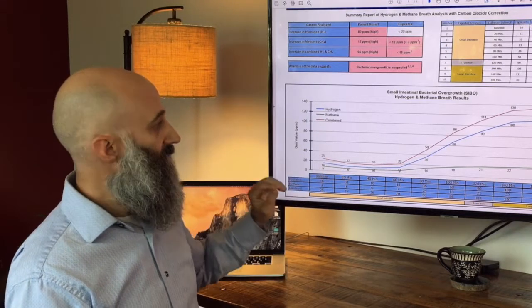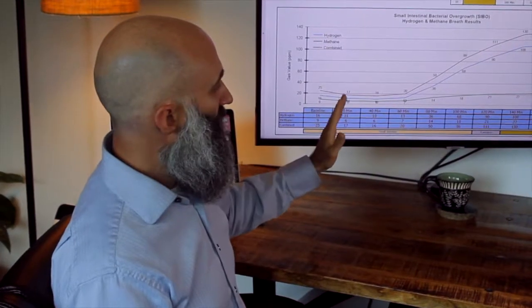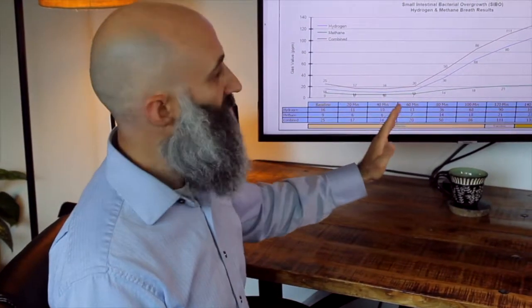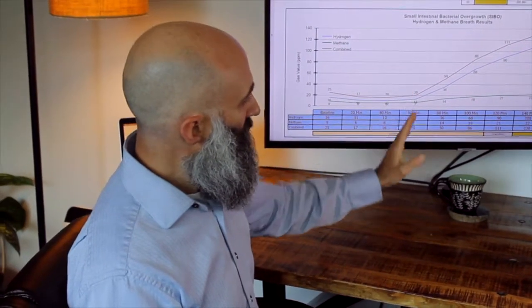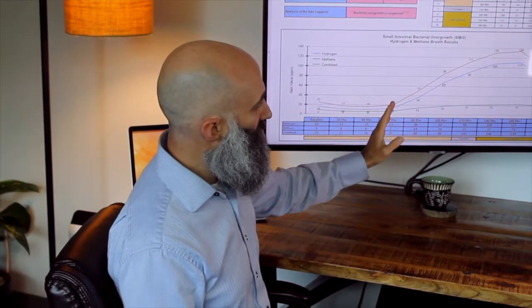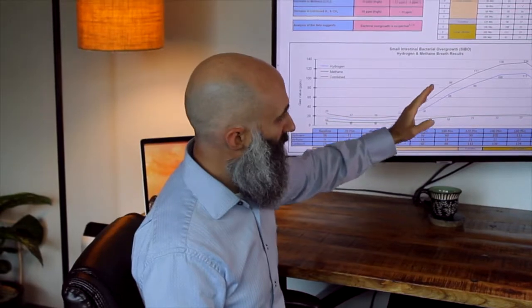This test is an example of a positive SIBO test. This person did a baseline, drank the lactulose, and the first part of the small intestine is fine, it's all clear, but about halfway into the small intestine it begins to spike upward and that's where we know we have a problem.